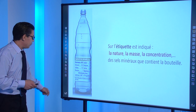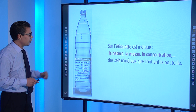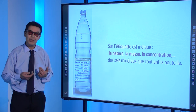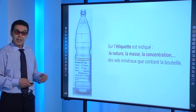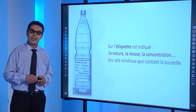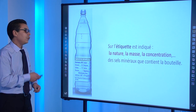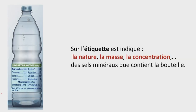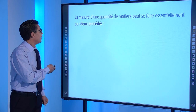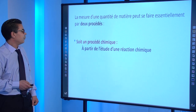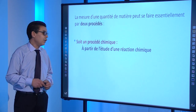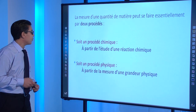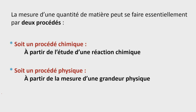En regardant bien cette étiquette, elle porte des indications qui nous informent en tant que consommateurs et peuvent aussi servir à contrôler et à surveiller la qualité du produit que contient la bouteille. La question qui se pose maintenant est : comment mesurer une quantité de matière ? La réponse est d'utiliser deux procédés : soit un procédé chimique basé sur l'étude d'une réaction chimique, soit un procédé physique à partir de la mesure d'une grandeur physique.